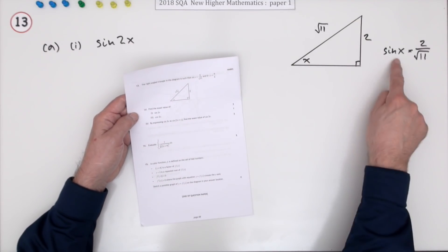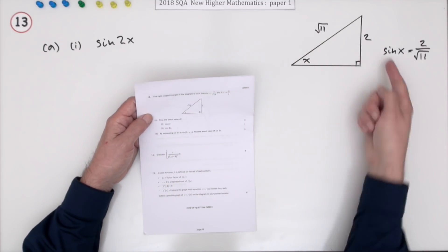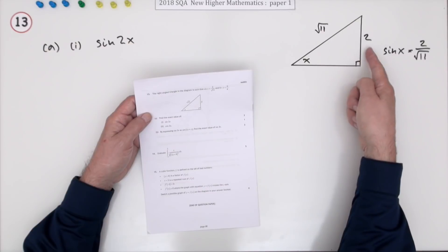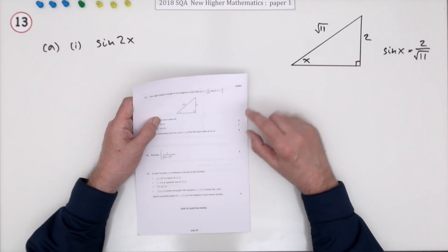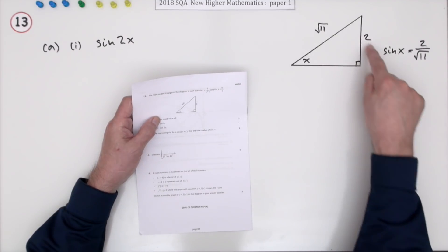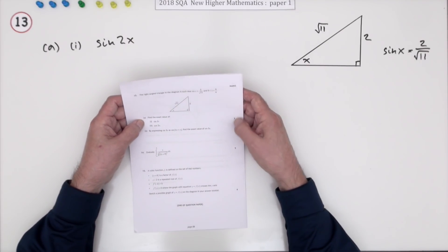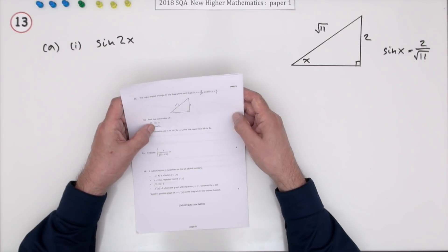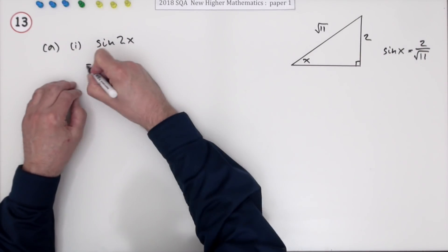That'd be the first thing you'd work out. You'd say oh, the sine's the opposite side. Maybe that even gives you a clue if you were a bit confused as to which was sine and which was cosine. If that's the sine, then the unknown one would have been the cosine. Anyway, what's it say? Find, for three marks, the exact value of sine 2x. You'll look up the front.